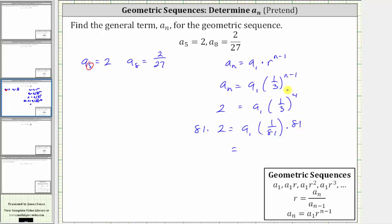And now to solve for a_1, we multiply both sides by 81. Notice on the right side, the 81's simplify to 1, giving us just a_1 times 1, which is a_1. On the left side, we have 81 times 2, which is equal to 162.